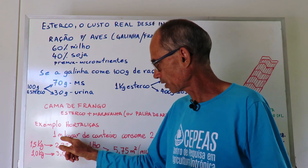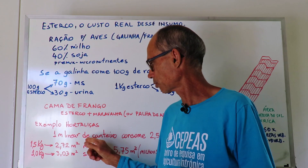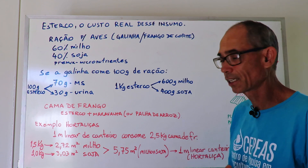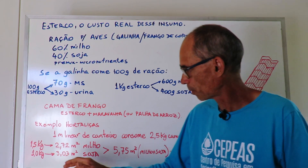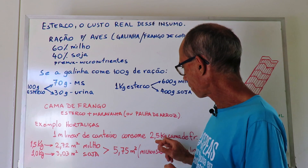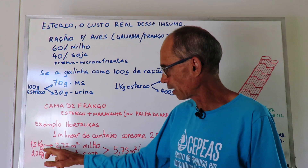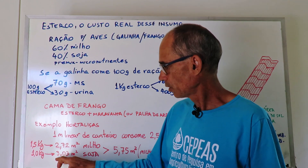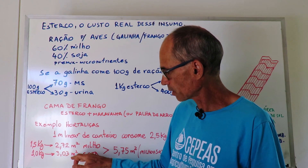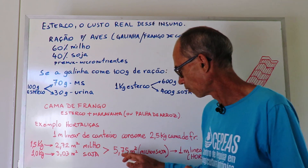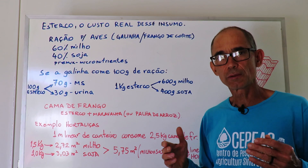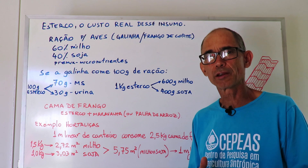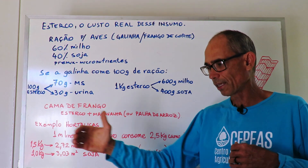Let's give a practical example with vegetables. We use 1 linear meter of vegetable bed here. For each 1 linear meter of a bed, we apply 2.5 kg of chicken bed esterco from the chicken house (galpão). So if 60% of those 2.5 kg originates from corn, that represents about 2.7 m² of corn planted, and the 40% from soy represents about 3.03 m² of soy planted. We fed the cow and it produced 2.5 kg of esterco, which we use in our 1 linear meter of bed.